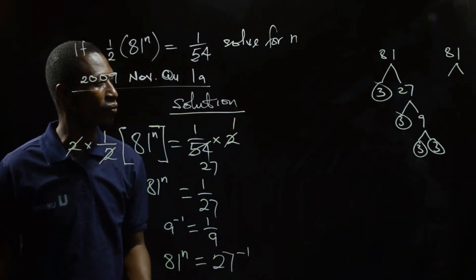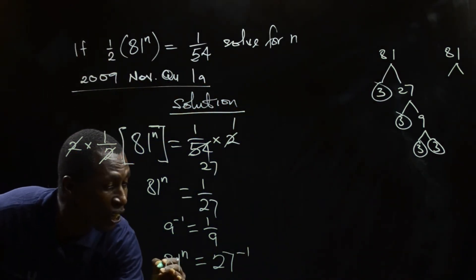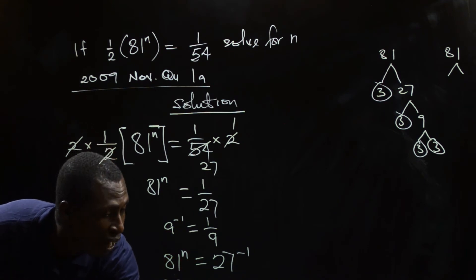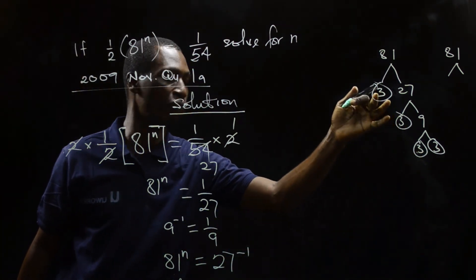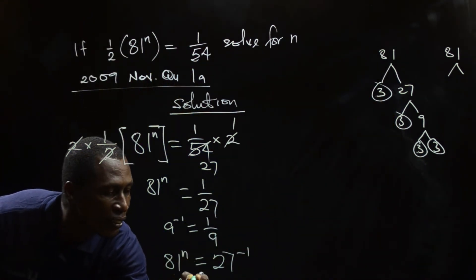So in this regard, I'm going to get, the 81 is now going to be represented by 3 to the power 4. 3 to the power 4. 1, 2, 3, 4. Into bracket n.